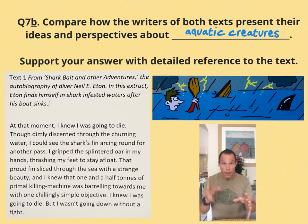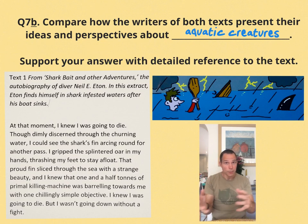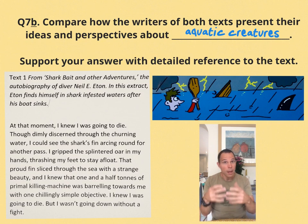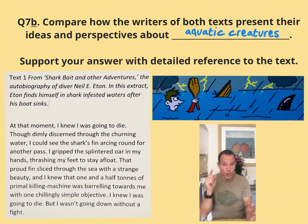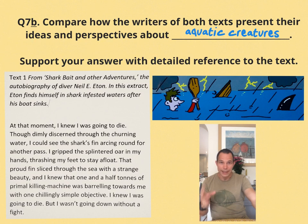Now, the thing with Question 7b is that the wording of that question tends to be fixed from year to year. Obviously they change the last word or phrase depending on whatever links or unifies that year's two texts. Given the fishy nature of the two texts I'm serving up today, I reckon the examiner could frame the question thus: 'Compare how the writers of both texts present ideas and perspectives on aquatic creatures.'